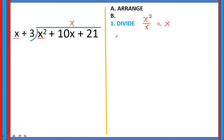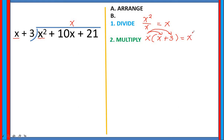Next step is multiply. What are you going to multiply? Your answer from step 1 — the quotient x — multiplied by the given divisor, which is x plus 3. Apply the distributive property: x times x, and then x times 3. So x times x is equal to x squared — remember the product rule, you add the exponents if they have the same base — and x times positive 3 is 3x. Write your answer below the dividend: x squared plus 3x.